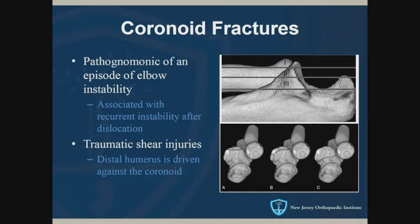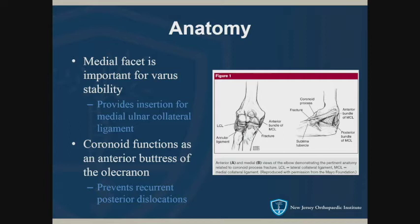The last fracture is coronoid fractures. These are symbolic that there's been an episode of elbow instability — if you have a coronoid fracture after dislocation, you have a higher risk of recurrence; it signifies the severity of the injury. These are traumatic shear injuries. What typically happens is a fall where the distal humerus drives through and shears off a component of the coronoid. The anterior bundle of the MCL, a primary static stabilizer, attaches to the medial facet of the coronoid — so if the fracture involves that insertion, you'll have significant instability. The coronoid also acts as an osseous buttress.